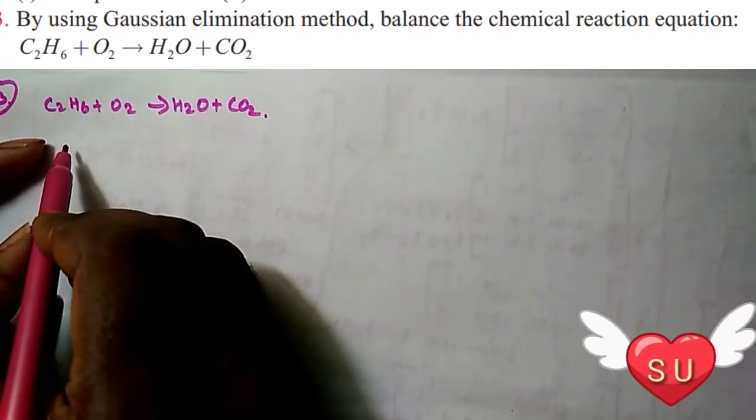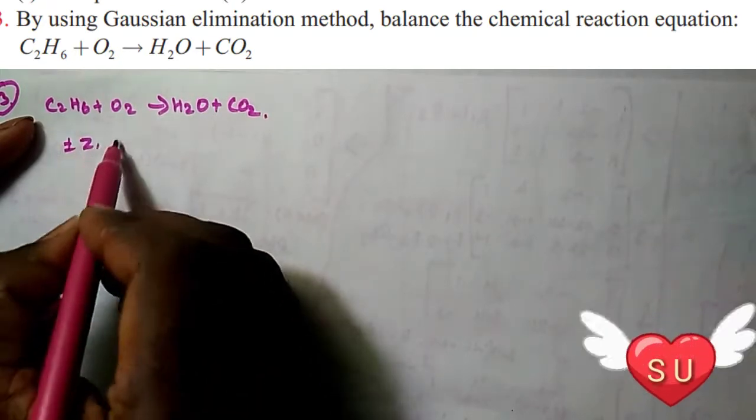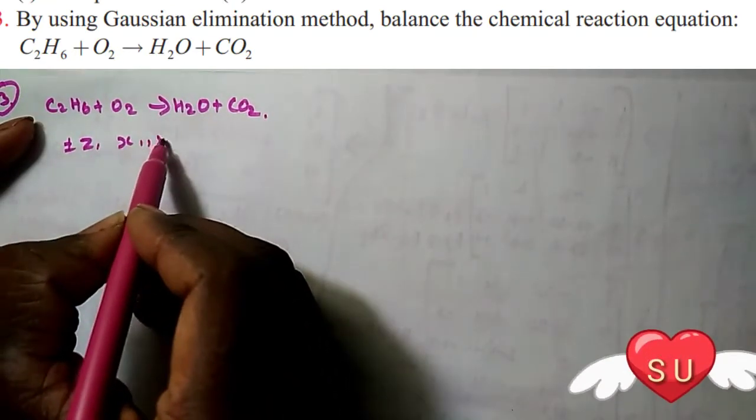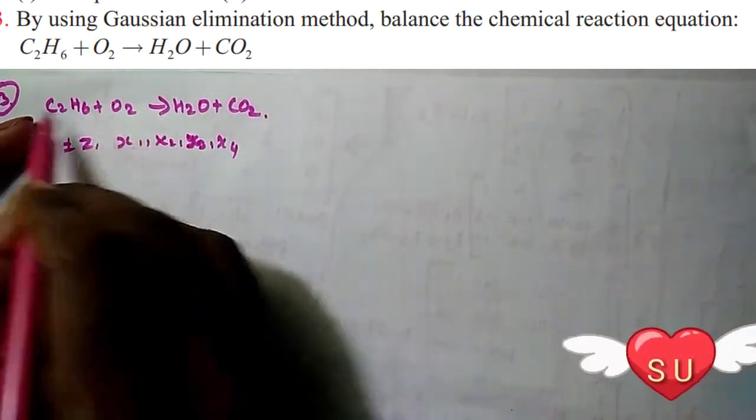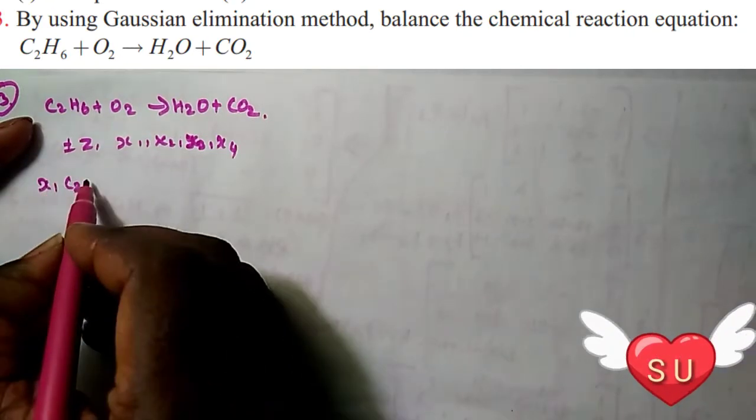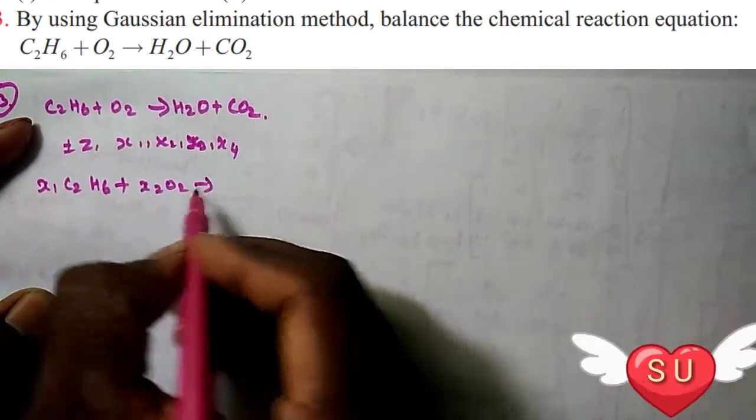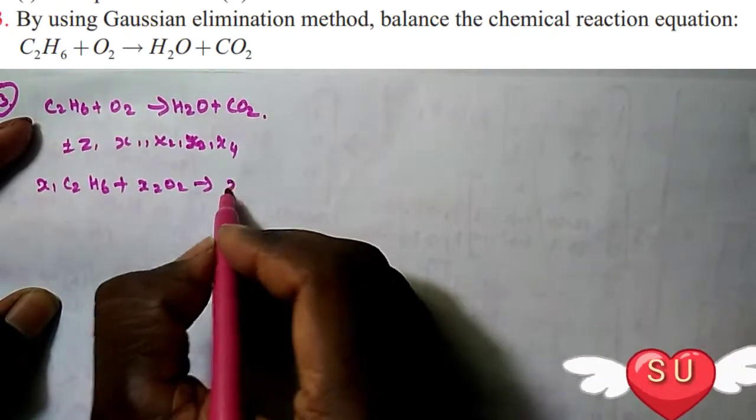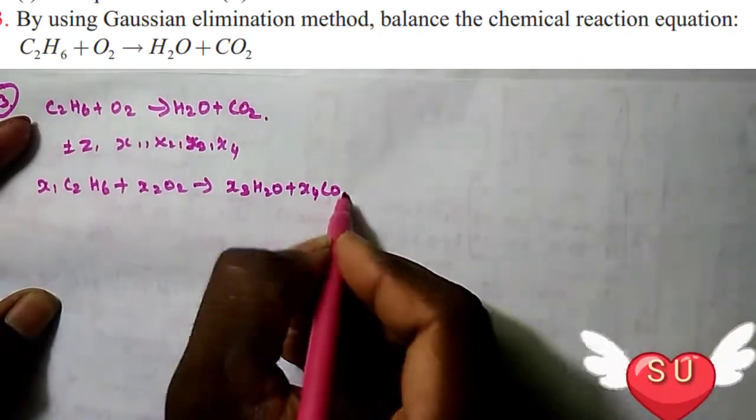We will solve using positive integers x1, x2, x3, x4. The equation is: x1 C2H6 plus x2 O2 gives x3 H2O plus x4 CO2.